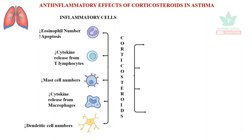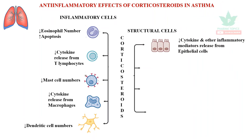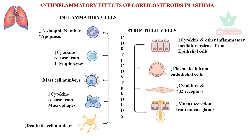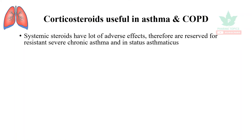In the structural cells of the respiratory tract, corticosteroids decrease cytokine and other inflammatory mediator release from epithelial cells, and decrease plasma leak from endothelial cells. They also decrease cytokine release and increase beta-2 receptor numbers, so bronchodilation occurs. Additionally, they decrease mucus secretion from the mucus glands of the respiratory tract.